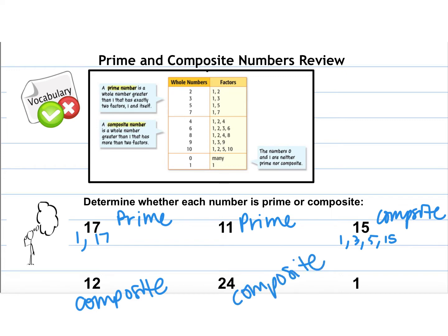And then remember, 1 — the only factor that it has is 1, but in order to be prime it has to have two factors, and composite has more than two, so it is neither.